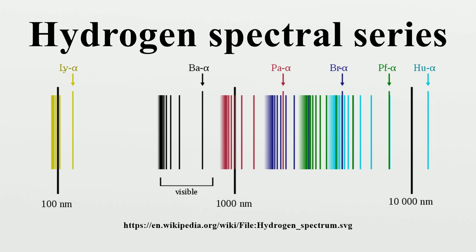The Lyman series is named after its discoverer, Theodore Lyman, who discovered the spectral lines from 1906 to 1914. All the wavelengths in the Lyman series are in the ultraviolet band.